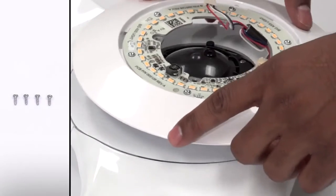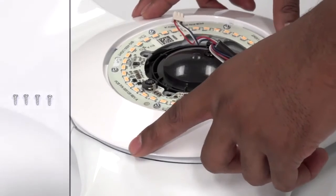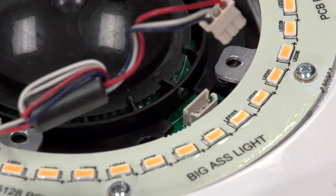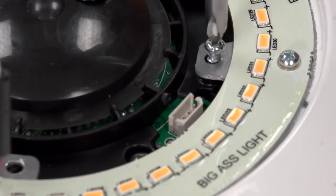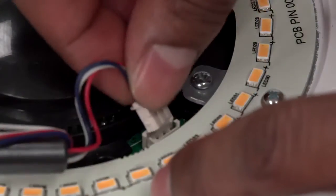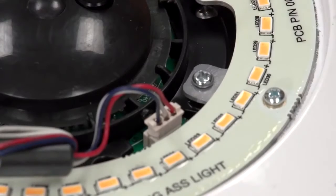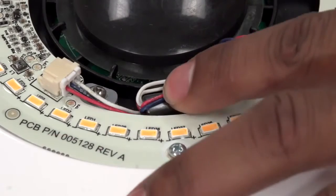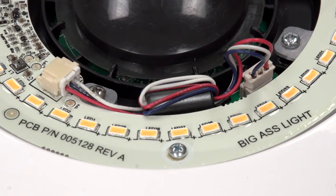Attach the light module to the fan with the four included screws. Please note that the light kit must be positioned so that the wiring harness can reach the wiring receptacle on the fan circuit board. Plug the wiring harness from the light module into the wiring receptacle on the fan circuit board. Tuck the wires gently into the groove on the light module so they won't be visible after installation.